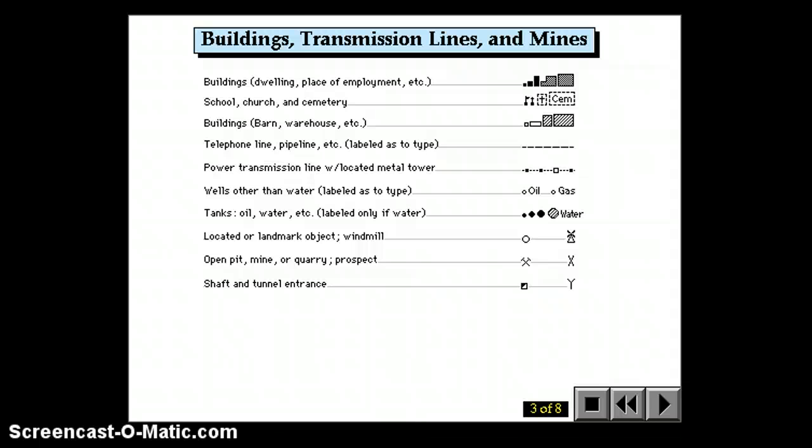Power transmission lines, oil and gas lines all have specific symbols as shown here. Quarries look like two-crossed pickaxes.